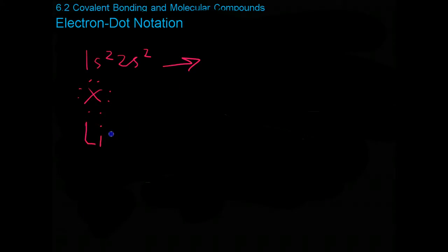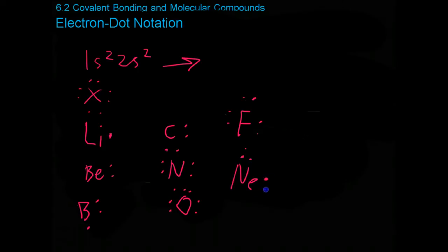Boron 3, carbon 4, nitrogen 5, oxygen 6, fluorine 7, and finally neon as the full octet with 8.